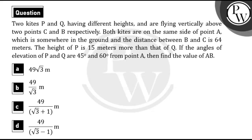Hello bacho, first of all let's read this question. The question is: two kites P and Q having different heights are flying vertically above two points C and B respectively. Both kites are on the same side of a point A which is somewhere on the ground, and the distance between B and C is 64 meters. The height of P is 15 meters more than that of Q. If the angles of elevation of P and Q are 45 degrees and 60 degrees from point A, then find the value of AB. There are 4 options given — A, B, C, and D — and we have to choose the correct option. So let's solve the question.